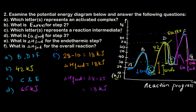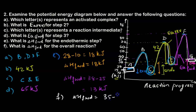Part F asks for ΔH forward for the overall reaction. This is the difference between the energy level of the main reactants and the main products. The reactants are at 15 kJ and the products are at 35 kJ, so ΔH(overall) = 35 − 15 = 20 kJ. This is how we solve problems involving potential energy diagrams for multi-step reactions.